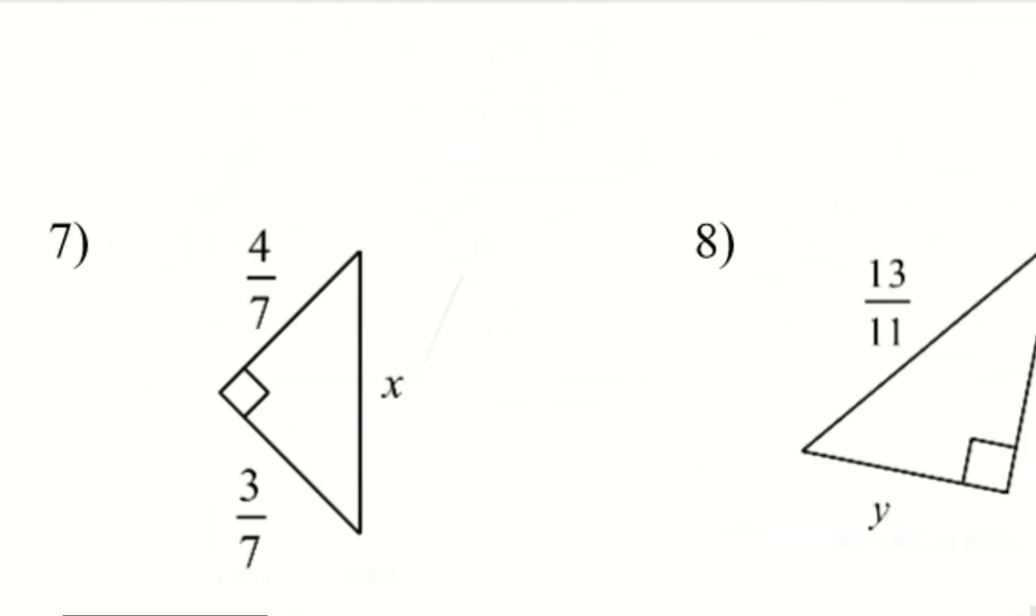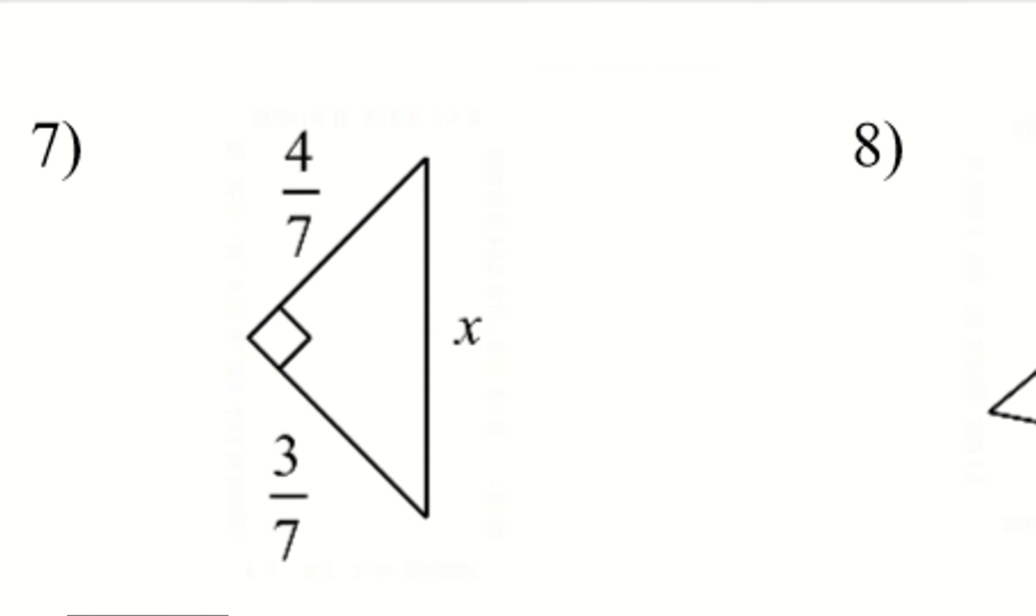Alright, let's go ahead and try a couple more. So, let's take a look at 7 down here. So, we have 4 over 7 and 3 over 7. Yes, these kind of look intimidating, but if we notice, they both have the denominators the same. So, if I really pay attention to the numerators, I have 4 and 3, which means my hypotenuse can be 5. So, remember, we have a triple that is 3, 4, 5.